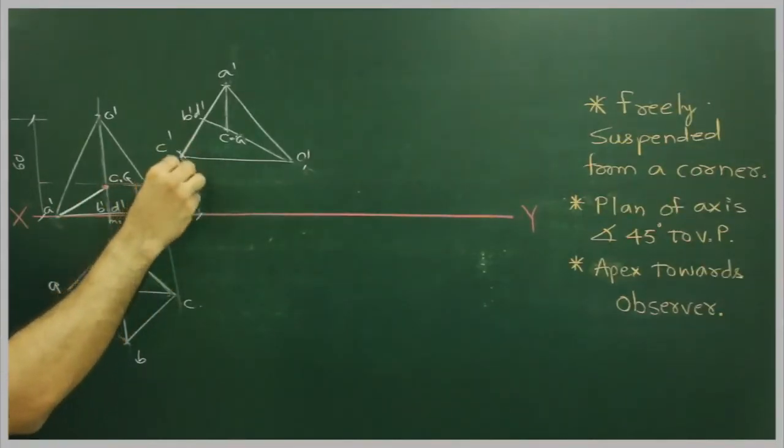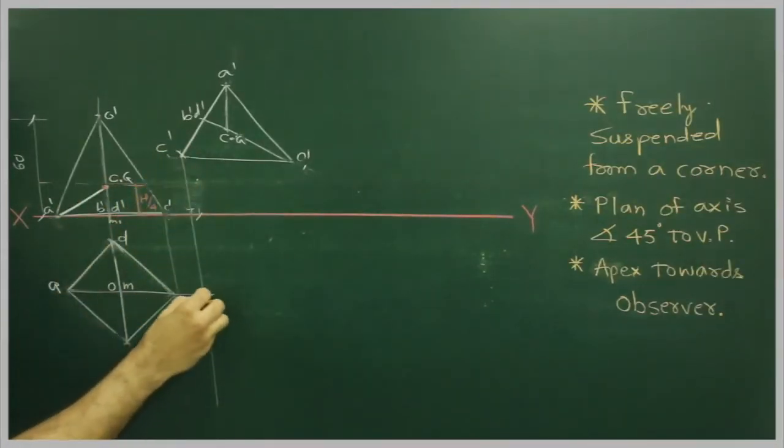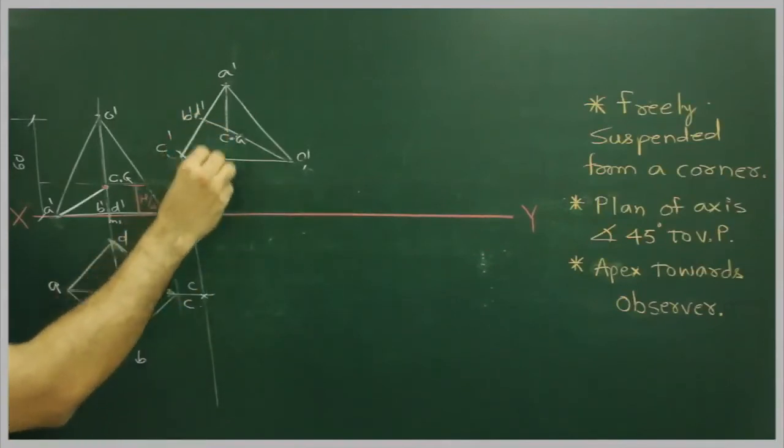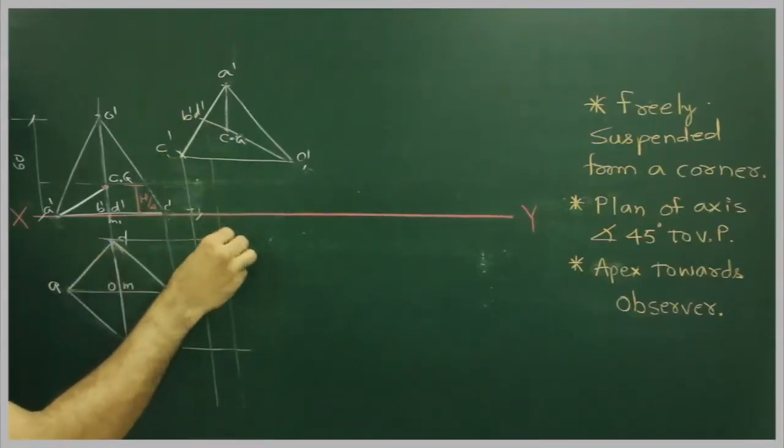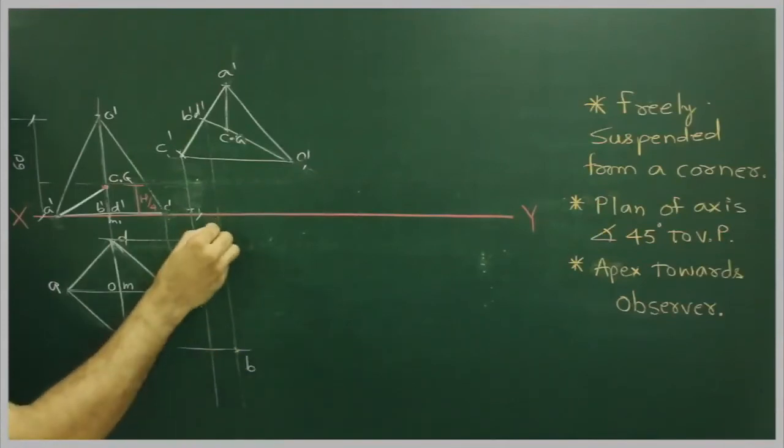Now we will project point C prime and C prime from here. So we can mark C, B prime, D prime from here, B prime and B prime from here. This is B prime and this is D.